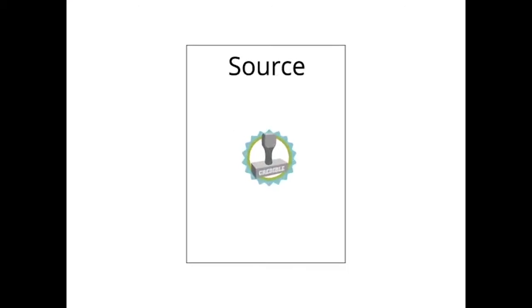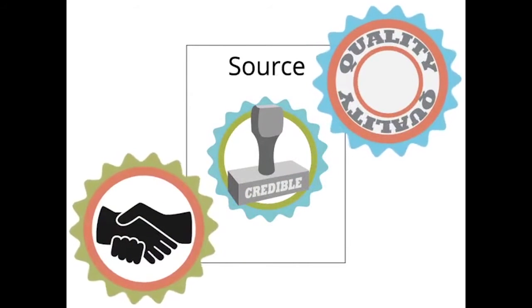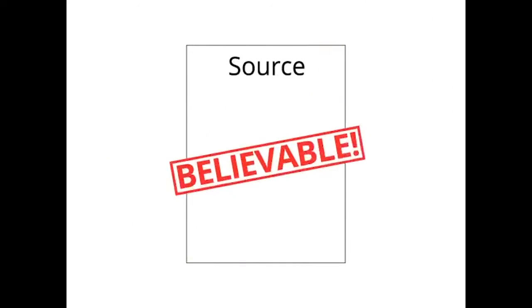When we describe a source as credible, we're basically saying that the information is high quality and trustworthy—essentially, that we can believe what the source is telling us.